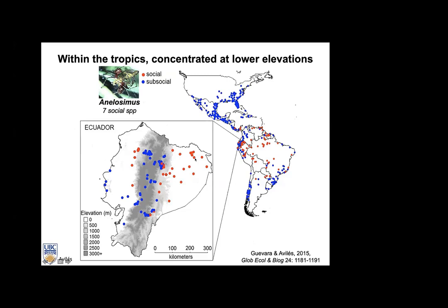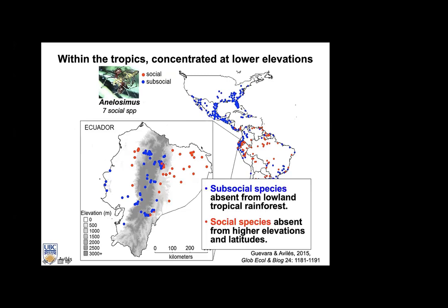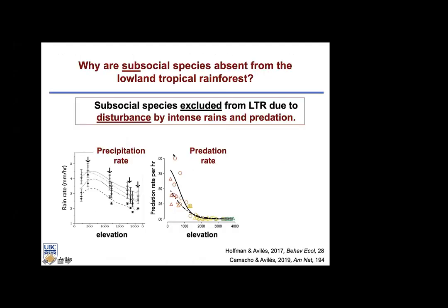The social species in this genus are shown with the red dots. Interestingly, the sub-social species have exclusive distributions at higher elevations and higher latitudes, absent from the lowland wet tropics, whereas the social species are absent from higher elevations and latitudes and are instead found in the lowland tropical rainforests for the most part.